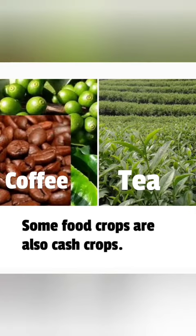There are some food crops which are also called cash crops, like for example coffee and tea. When food crops are grown on a large area for human consumption as well as for trade, they are called cash crops.